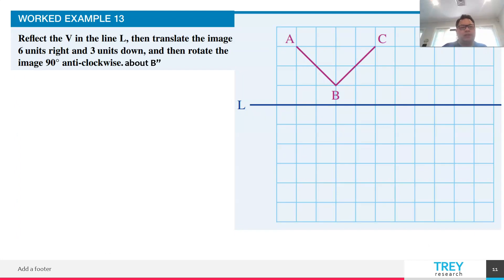The next one is a combination of transformation. First, you need to reflect V in the line L. I get all the respective image points. That's how I get the reflected V. Then after that, translate the image six units right and three units down. That's where I will find a new image, which is A double prime, B double prime, C double prime. Then rotate the image 90 degrees anticlockwise about B. This about B is actually missing, so I had to have it on. With reference to B double prime again, I rotate it 90 degrees anticlockwise. That's how I get the new image, which is A, B, C triple prime.